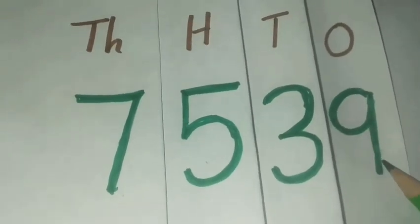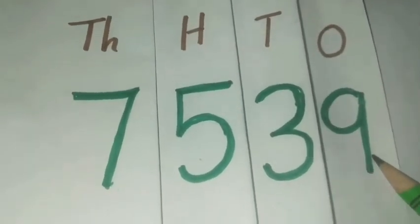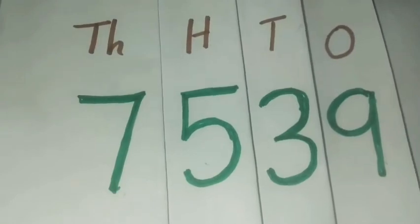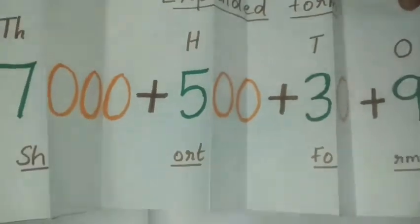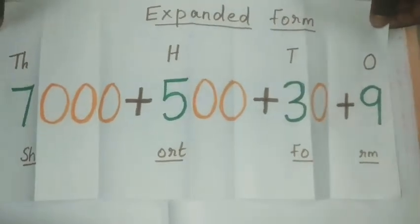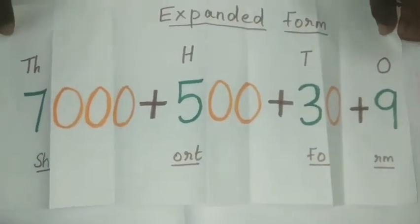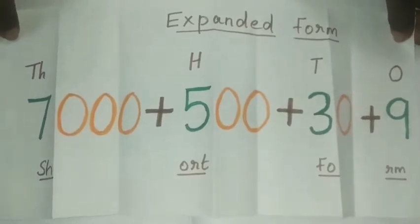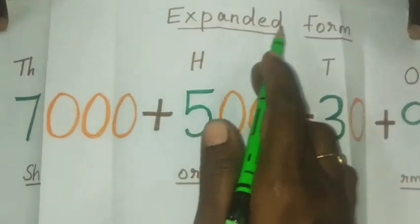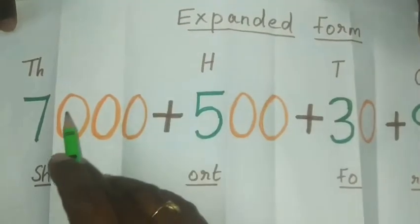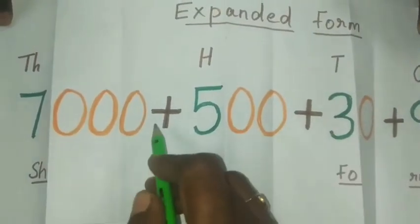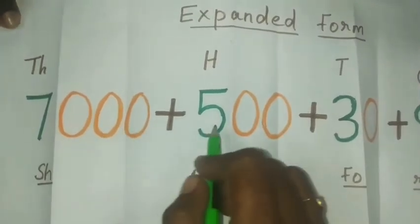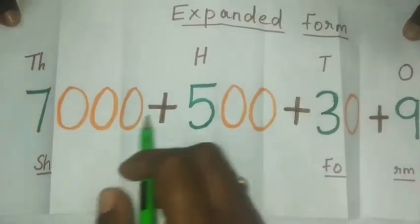We want to write the expanded form for this number. Shall we see the expanded form? We already said expanded form means the sum. Sum means the addition, sum of the place values of the given number.